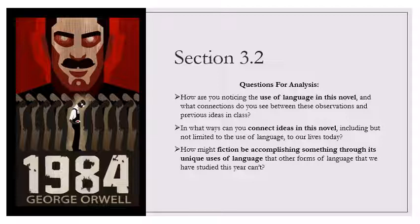Their real weapon was the merciless questioning that went on and on for hour after hour, tripping him up, laying traps for him, twisting everything that he had said, convicting him at every step of lies and self-contradiction until he began weeping as much from shame as from nervous fatigue. Sometimes he would weep half a dozen times in a single session. Most of the time they screamed abuse at him and threatened at every hesitation to deliver him over to the guards again. But sometimes they would suddenly change their tune, call him comrade, appeal to him in the name of Ingsoc and Big Brother and ask him sorrowfully whether even now he had not enough loyalty to the party left to make him wish to undo the evil he had done. When his nerves were in rags after hours of questioning, even this appeal could reduce him to sniveling tears.